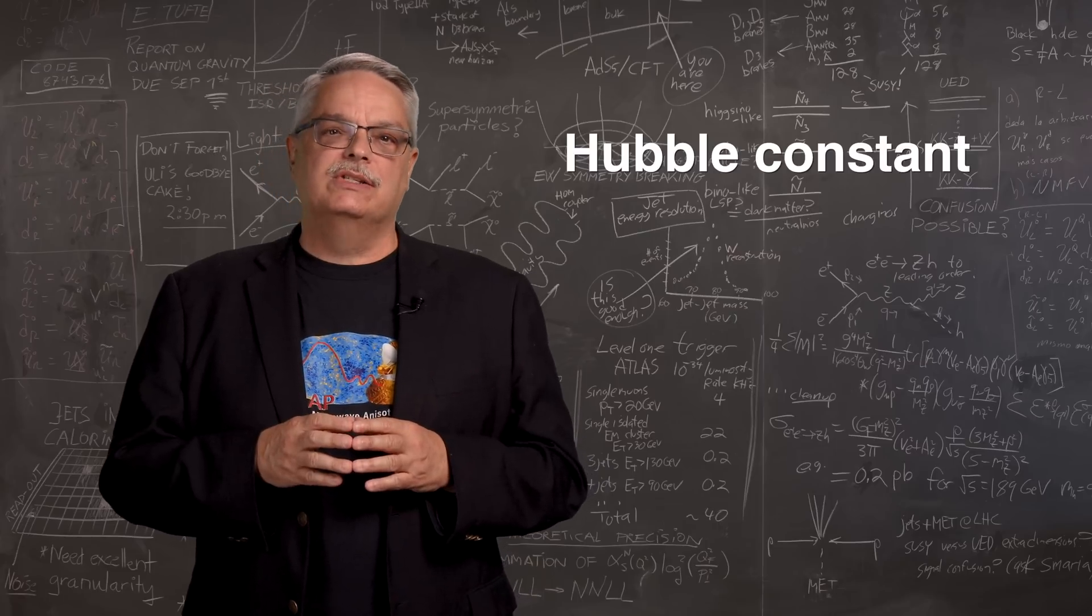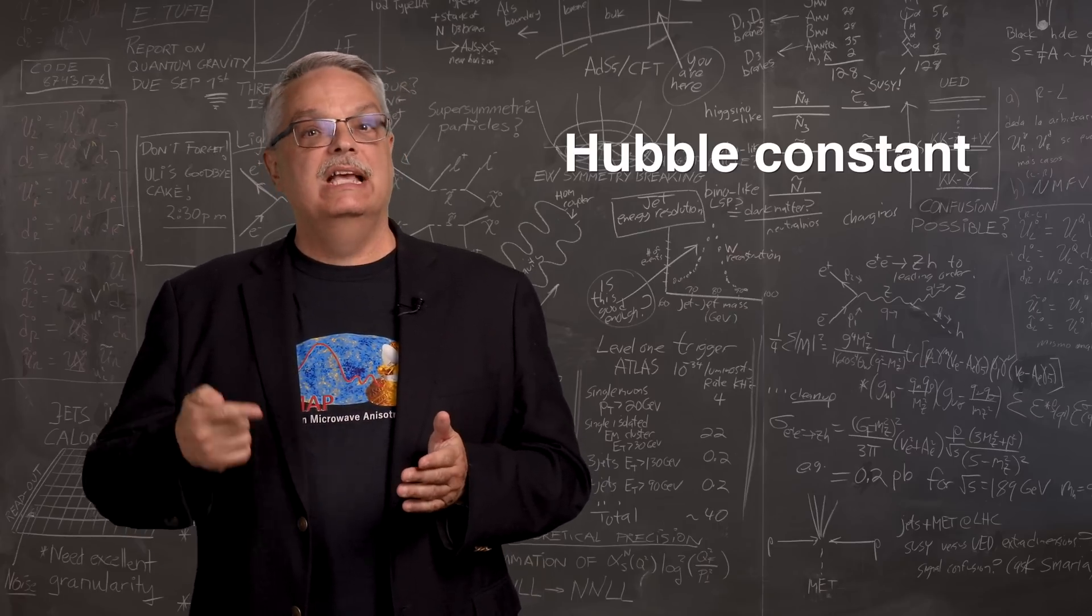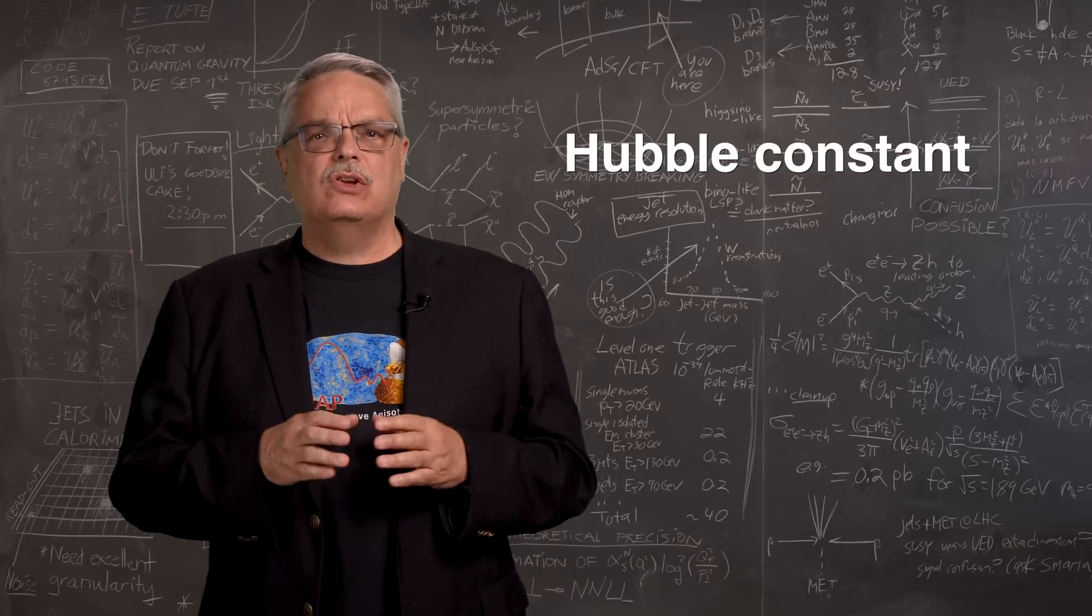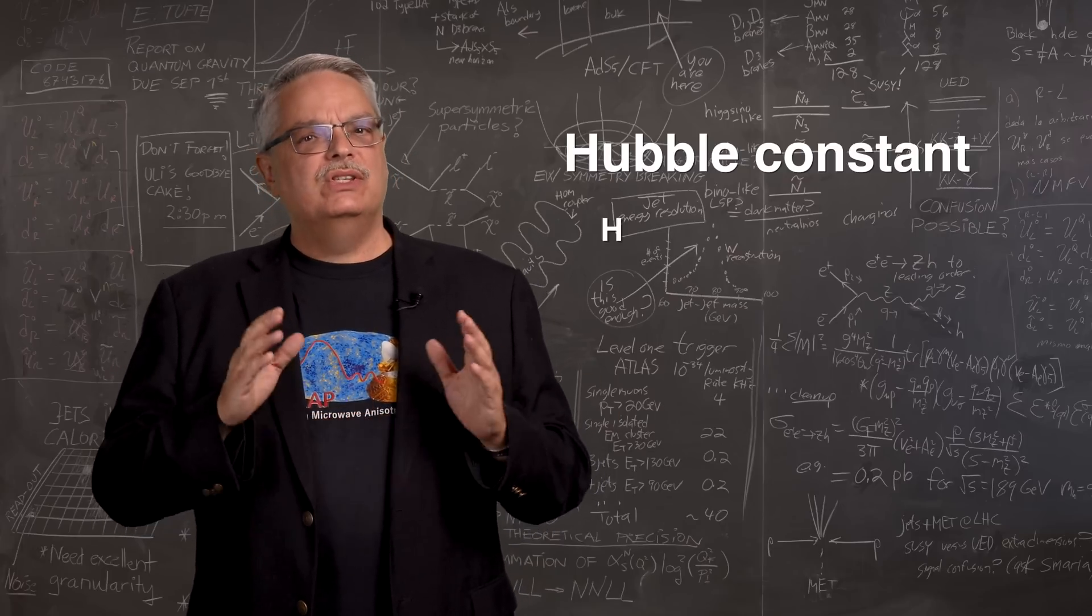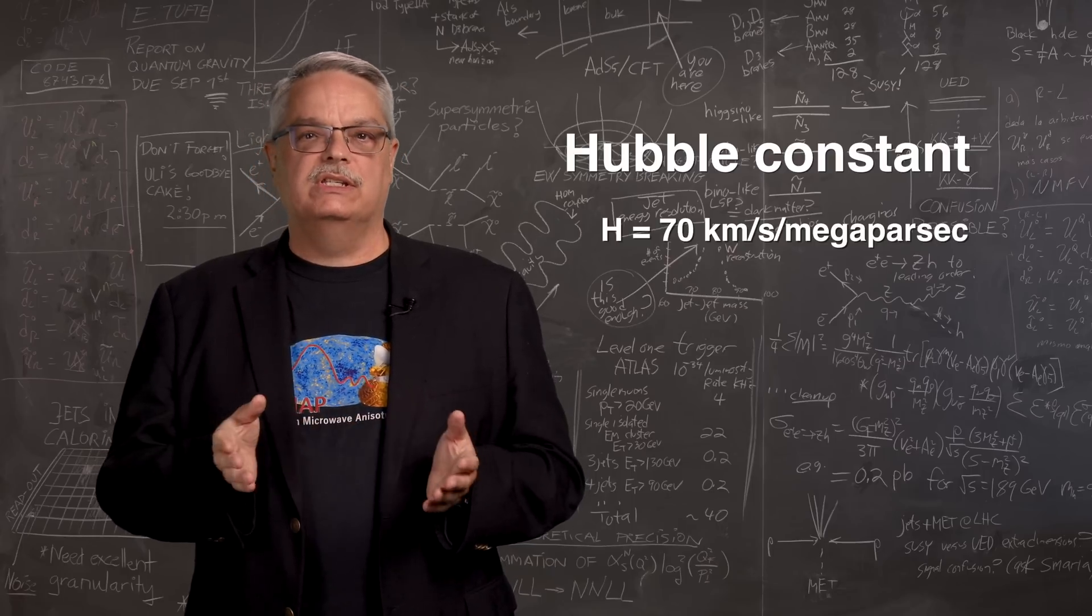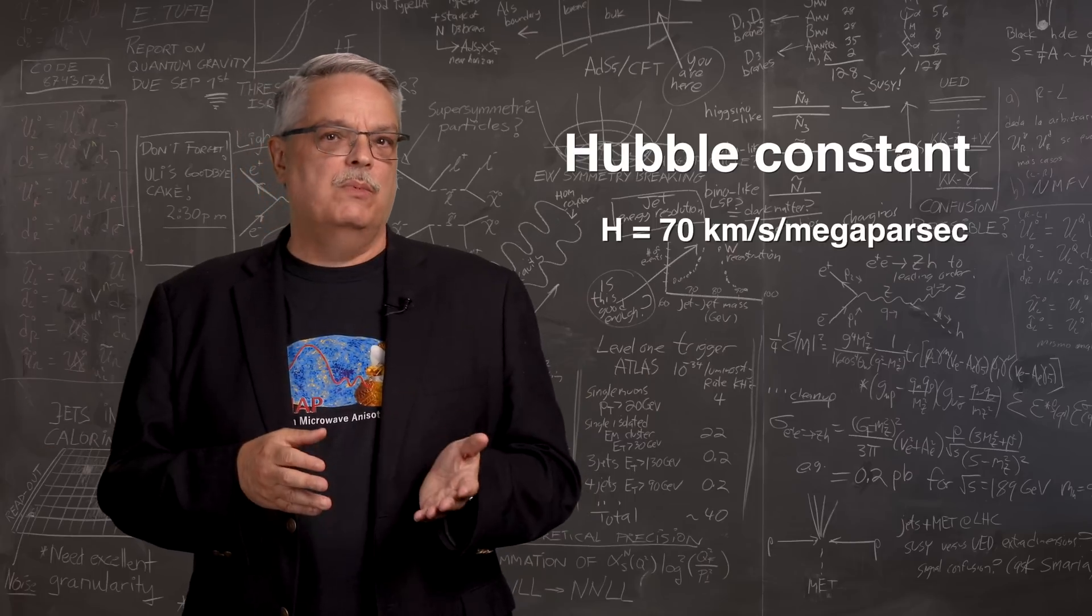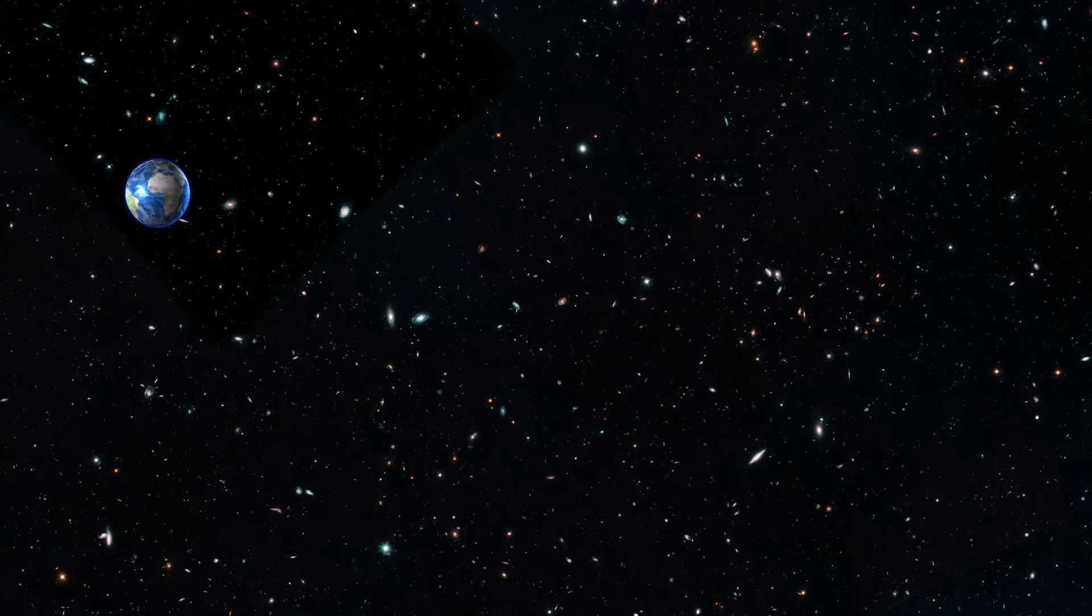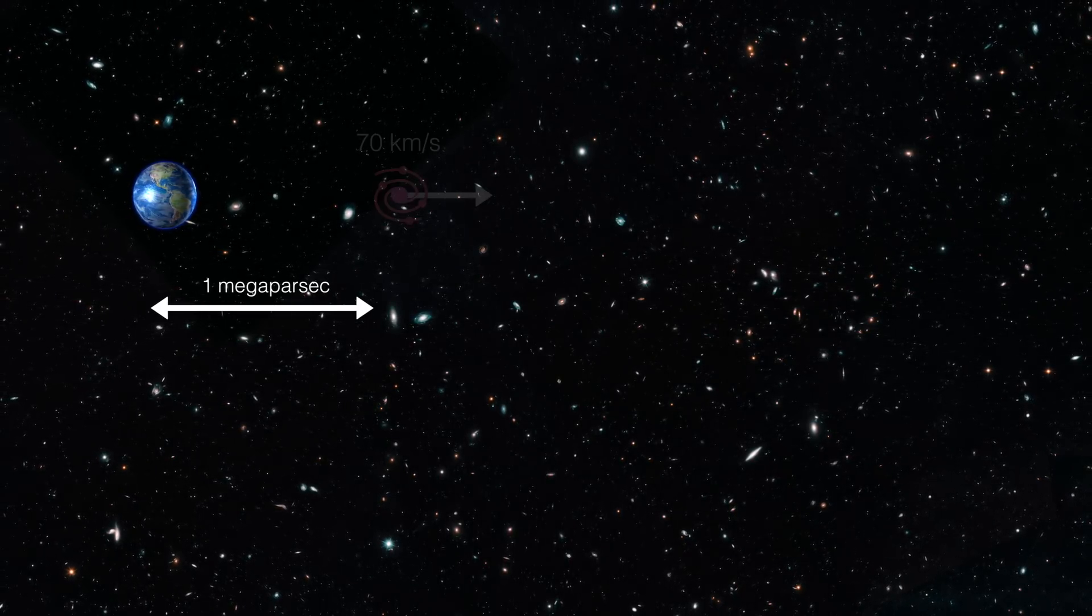Basically, the Hubble constant tells us how fast galaxies are moving away from us as a function of their distance. Let's start by talking about the Hubble constant in round numbers. It's about 70 kilometers per second for every megaparsec of distance the galaxy is from the Earth. A megaparsec is just 3.3 million light years.